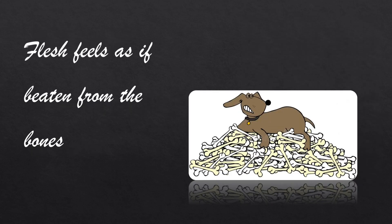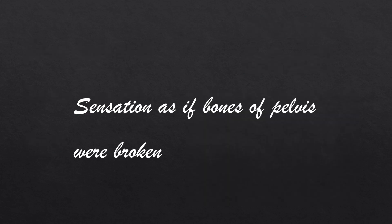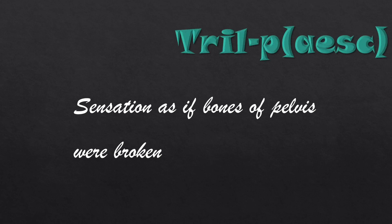Next symptom: flesh feels as if beaten from the bones. This is seen in Thuja — in Thuja, Phytolacca has also been given in brackets. So flesh feels as if beaten from the bones is given in Thuja and Phytolacca.